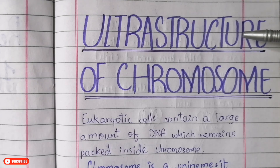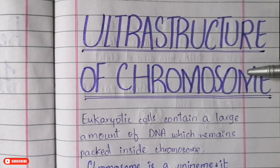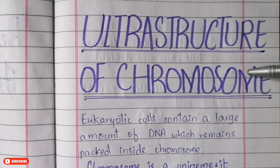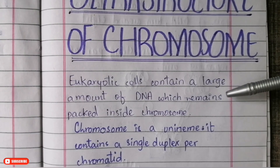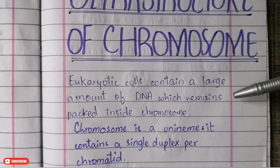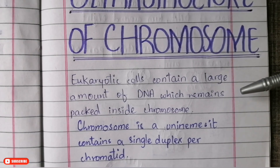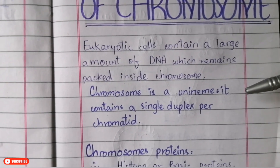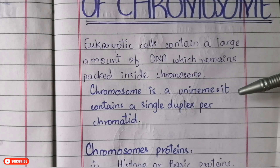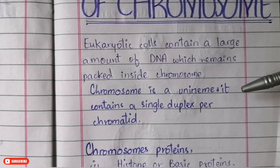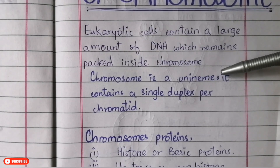Welcome back to another exciting episode. Today we are going to discuss the ultrastructure of chromosomes — what chromosomes are and how they structurally differ from other essential molecules present in our body. Eukaryotic cells basically contain a large amount of DNA that is packed together or folded together in the chromosomes. Today we will see how they fold and how they exactly form the structure of the chromatid.